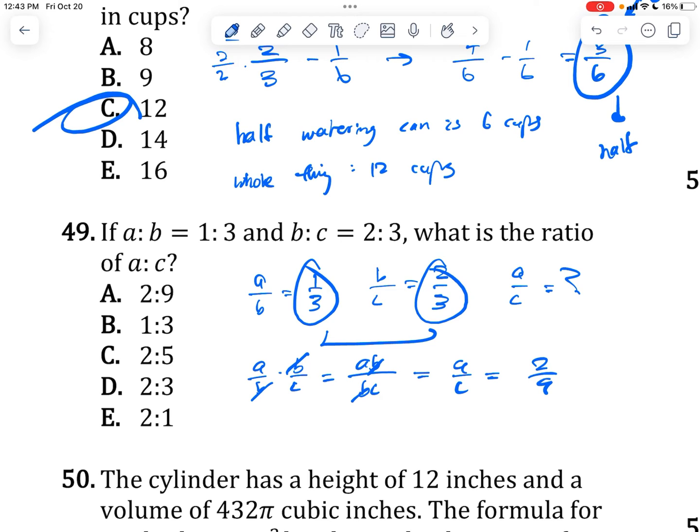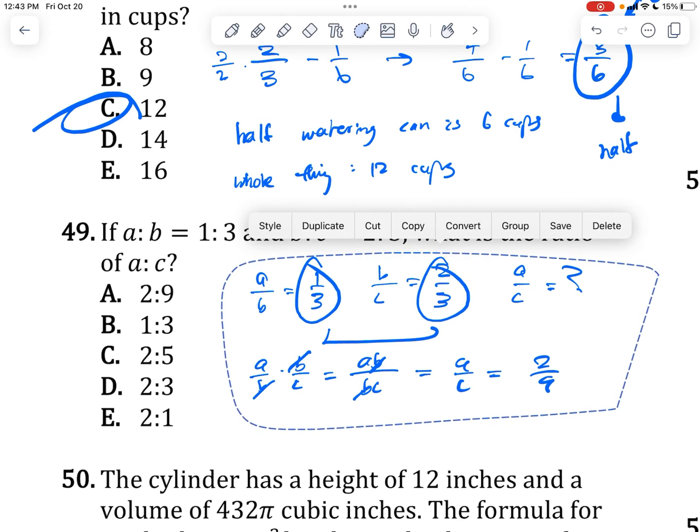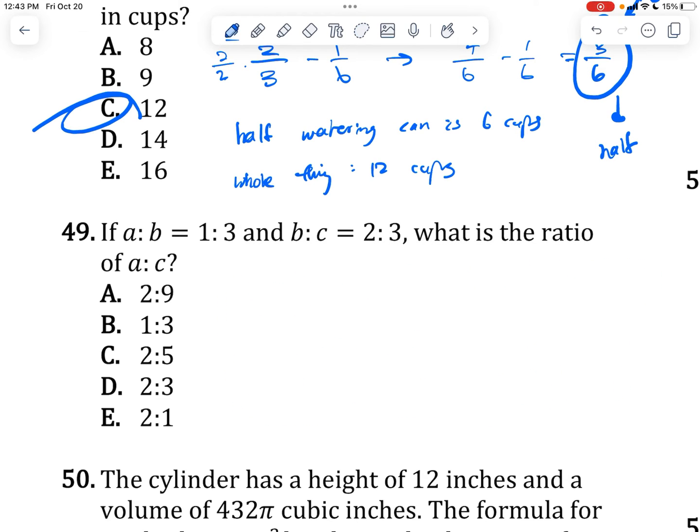Another way to do it is to solve for a and then solve for c and then divide them individually. a over b is equal to 1 over 3, b over c is equal to 2 over 3. If we solve for a, we get 3a equals b, a equals b over 3. If we solve for c, we get 3b equals 2c. We get divided by 2, c equals 3 over 2b.